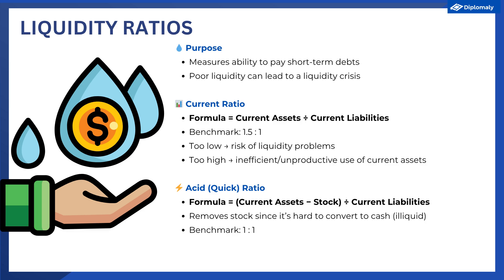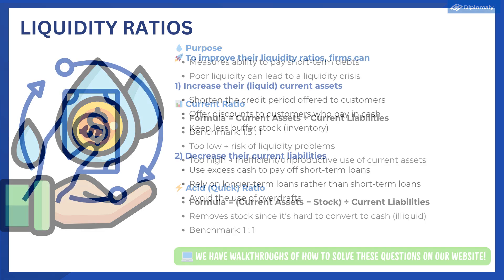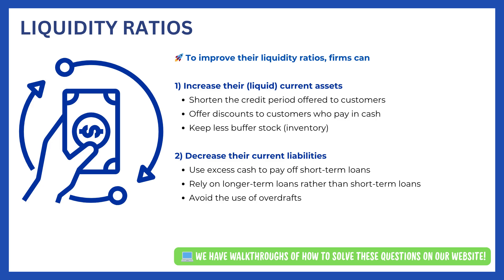A good benchmark for the acid test ratio is 1 to 1, which shows the firm has enough liquid current assets to pay off its current liabilities. To improve liquidity ratios, firms either need to increase current assets or decrease current liabilities. On the current assets side, firms might encourage customers to pay by cash or use surplus cash to pay off short-term debts. On the current liabilities side, firms can negotiate with suppliers for an extended credit period or fund more of their debts using long-term loans rather than short-term loans, giving them more flexibility over repayment.